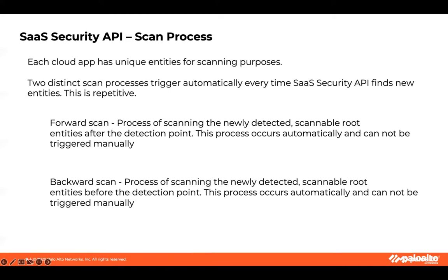There are different types of entities in different cloud apps, so when we scan applications, we scan different things. There are two different scan processes: forward scan and backward scan. Both start automatically and cannot be started manually. The initial discovery process is a backward scan. Forward scan scans all new assets after the detection point. The backward scan is not supported for all applications — for example, we do not support backward scan for Bitbucket, Slack Pro and Business, Zoom, Jira Cloud, or Confluence Cloud. The forward scan is supported for all applications.